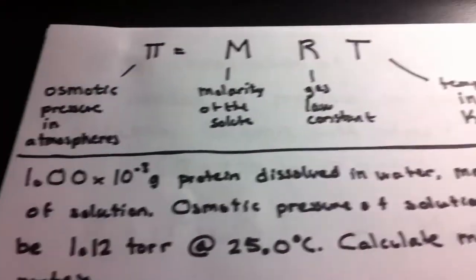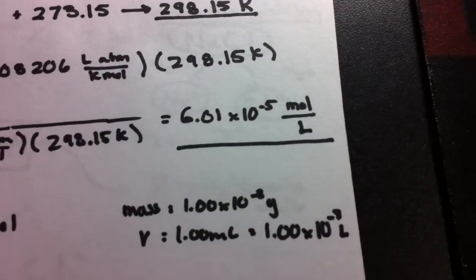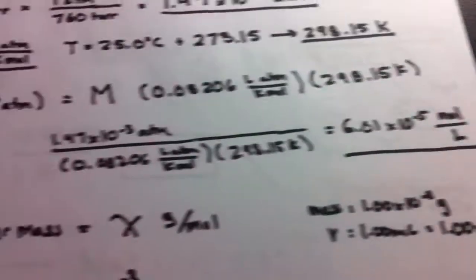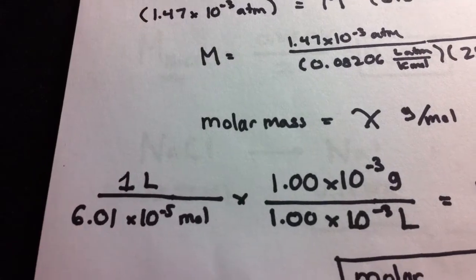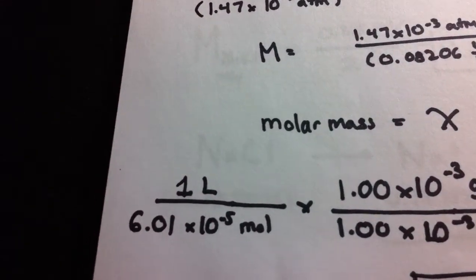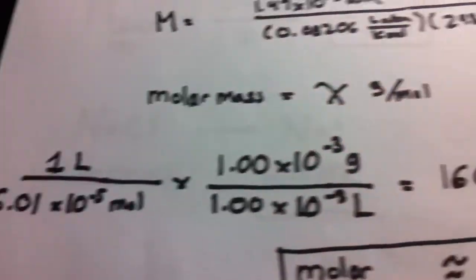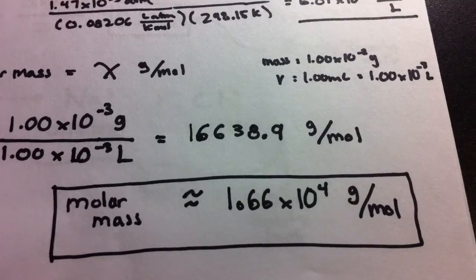We're also given the grams and milliliters. So we have the grams here, and we change the milliliters to liters. We have grams and liters, so we can cancel out units. In this case, the liters cancel out, and the grams and moles stay. And that's how we find the molar mass.